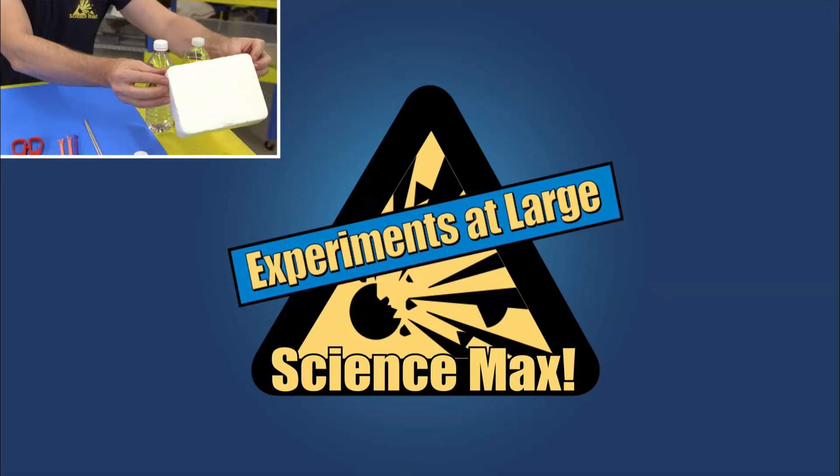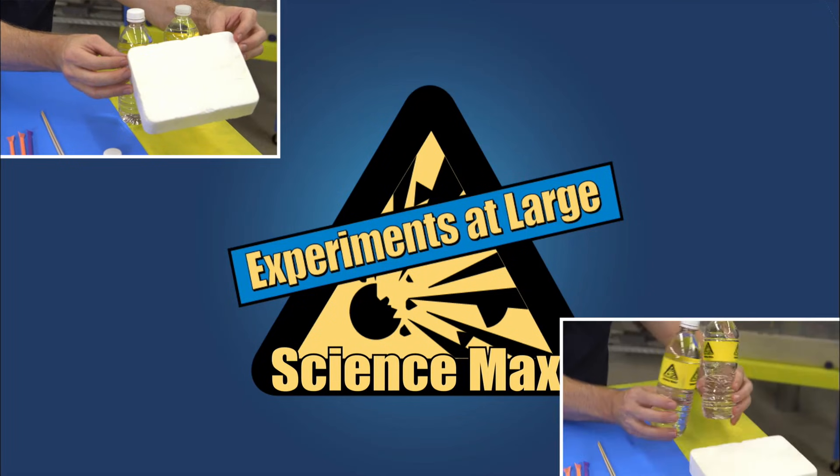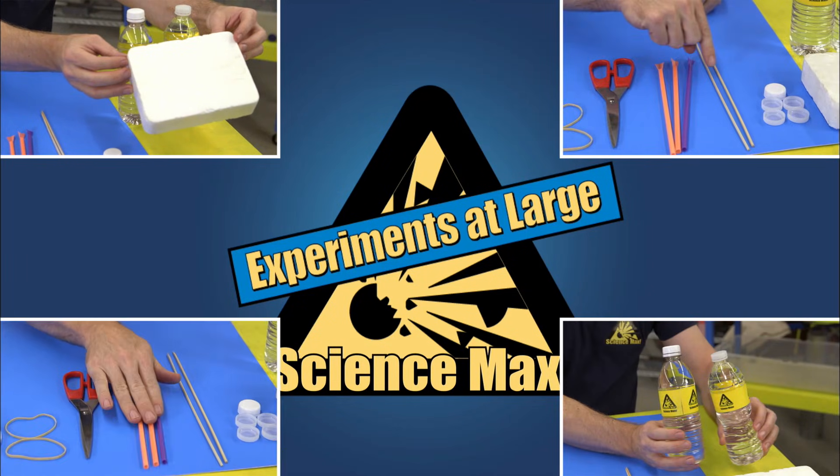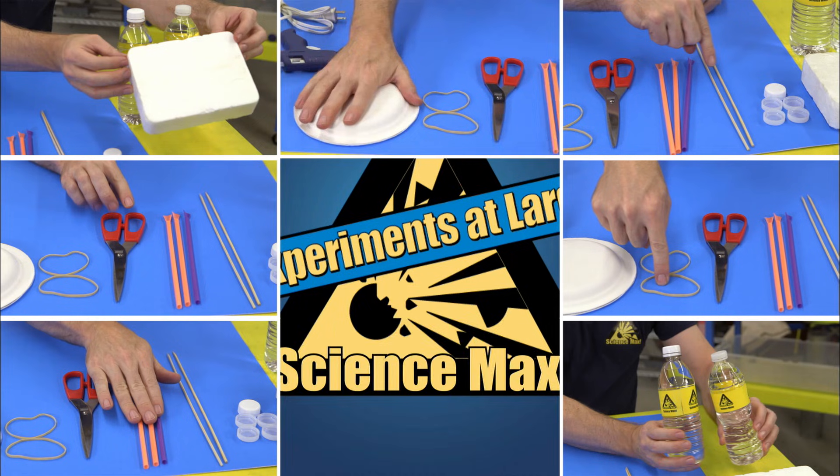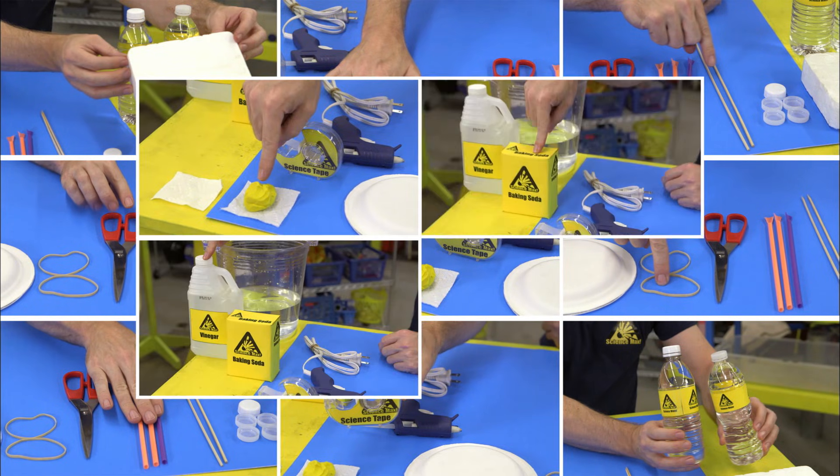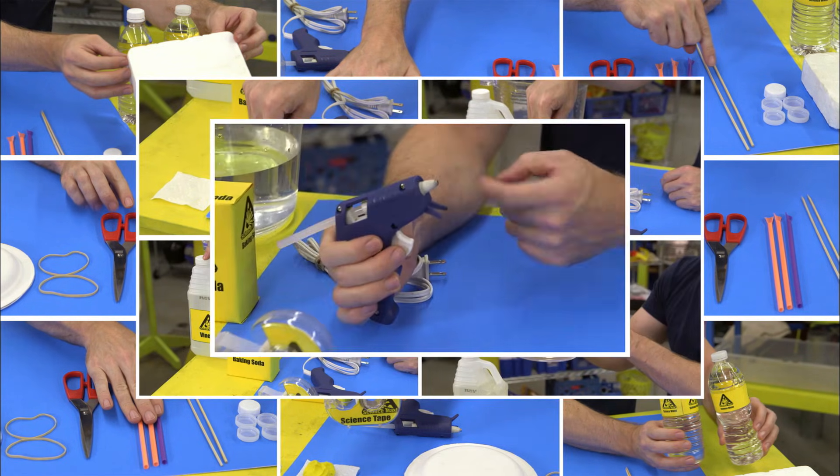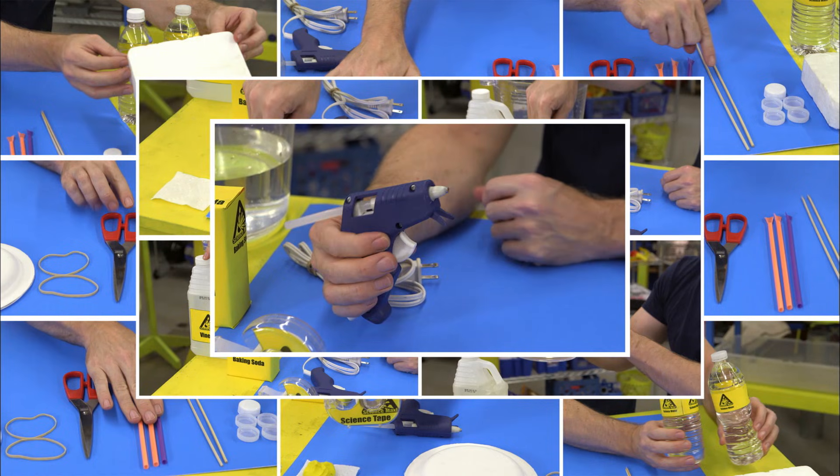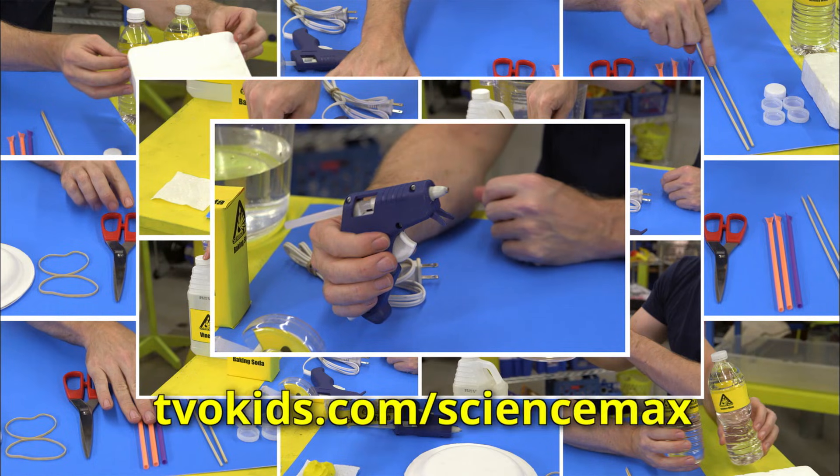You'll need a base for your car like this styrofoam, water bottles, shish kebab skewers, straws, scissors, elastics, paper plates, tape, a square of paper towel, modeling clay, vinegar, baking soda, water, and glue or a hot glue gun if you have an adult to help you. Yeah, I know, this one is pretty involved. That's why you should go to the website for step-by-step instructions.